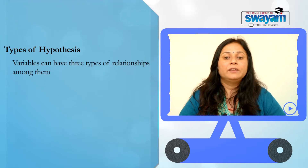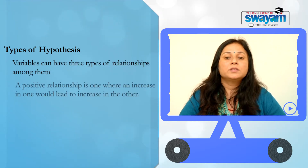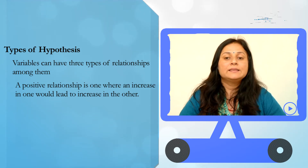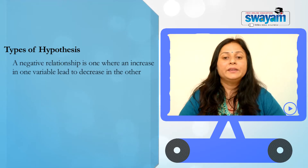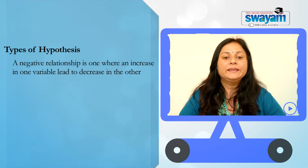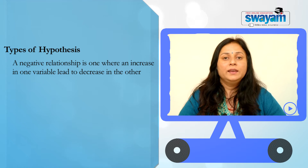Variables can have three types of relationship among themselves. A positive relationship is one where an increase in one would lead to increase in the other — for example, the more you study, the higher your score would be. A negative relationship is one where an increase in one variable leads to decrease in the other — more you watch TV, less marks you are going to get.